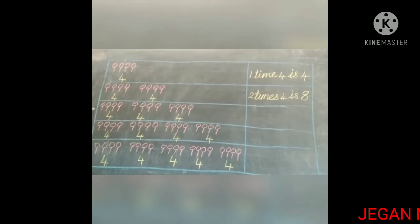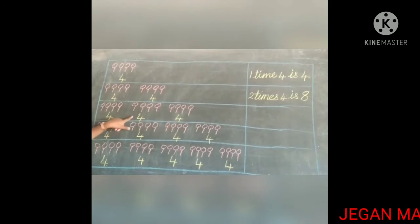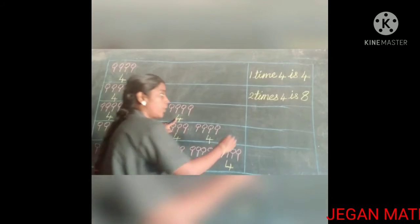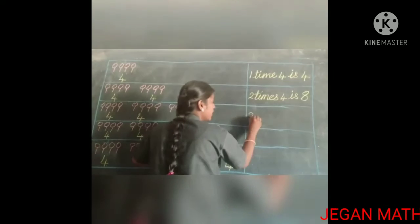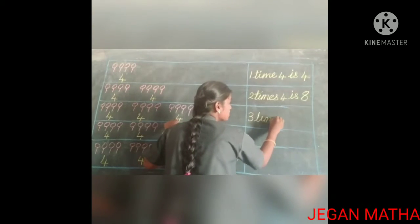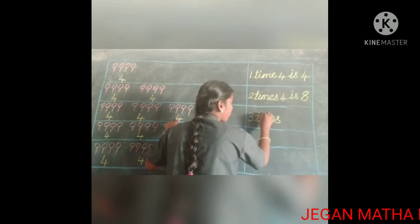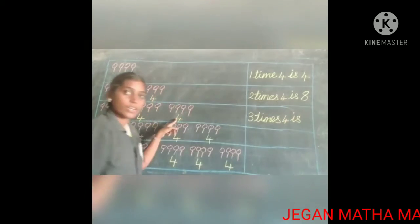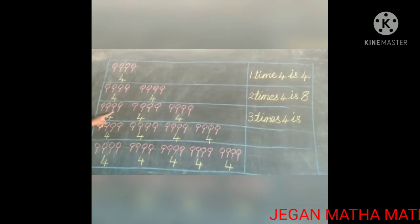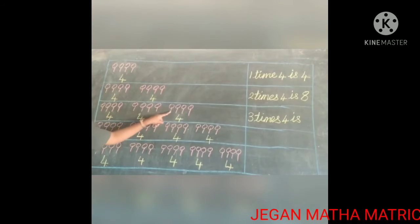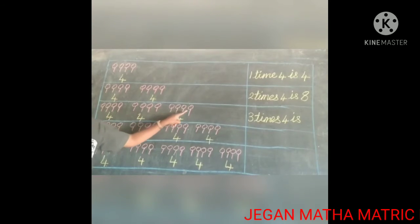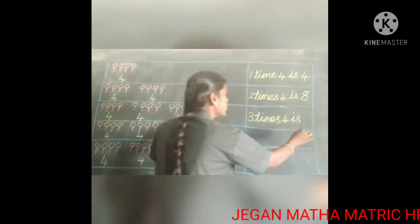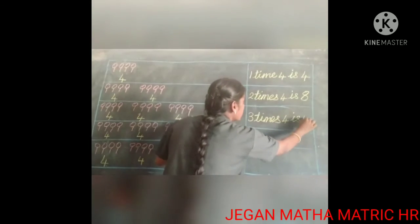Now look at the third box. How many times did 4 come? 1, 2, 3 — three times. So write it here: 3 times 4 is... How many totally? Count: 1, 2, 3, 4, 5, 6, 7, 8, 9, 10, 11, 12. So 3 times 4 is 12.